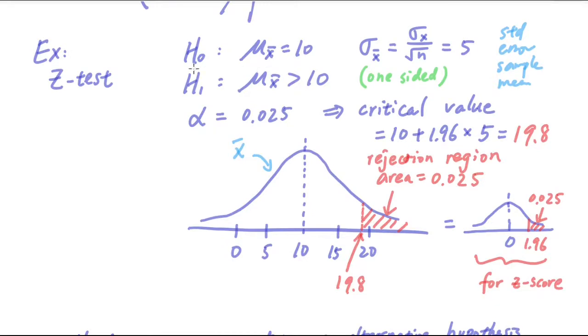So in this example we have the null hypothesis that the mean is 10 and the standard deviation of the mean is 5. Notice this is calculated using the population standard deviation divided by square root of n. This is also known as the standard error of the sample mean.